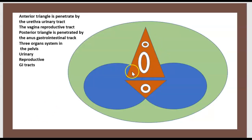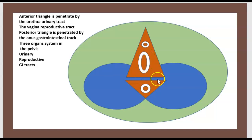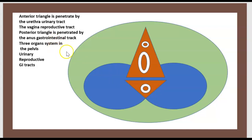The anterior triangle is penetrated by the urethra (urinary tract) and the vagina (reproductive tract). The posterior triangle is penetrated by the anus (gastrointestinal tract). There are three organ systems in the pelvis: urinary, reproductive, and GI tract.